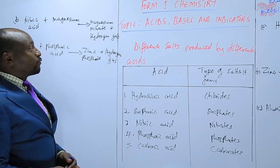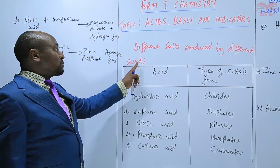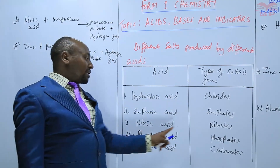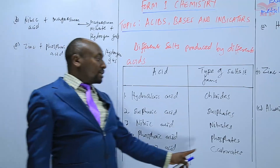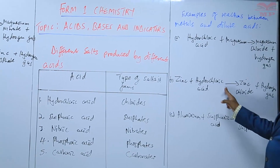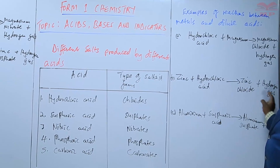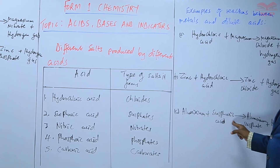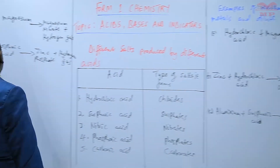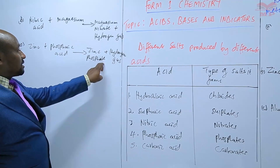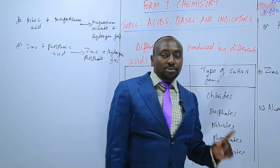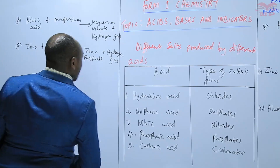So we have seen five examples of metals reacting with acids to form different salts. When we use hydrochloric acid we get a chloride, nitric acid gives a nitrate, sulfuric acid gives a sulfate, and phosphoric acid gives a phosphate — plus hydrogen gas in every case.